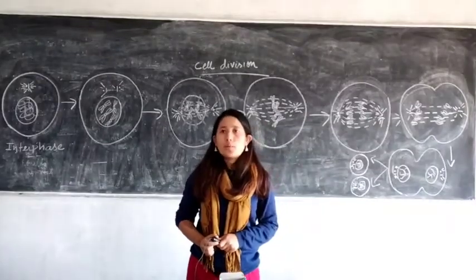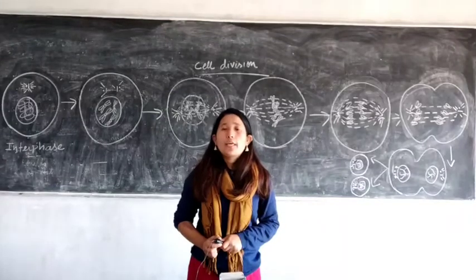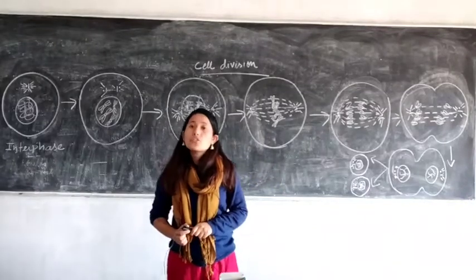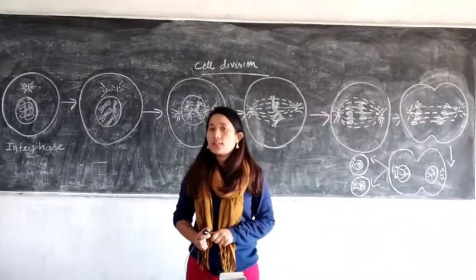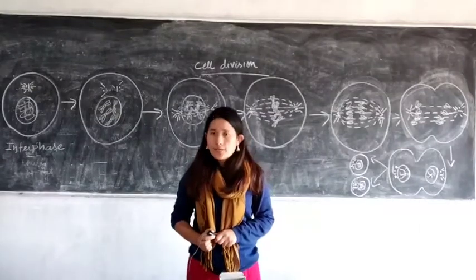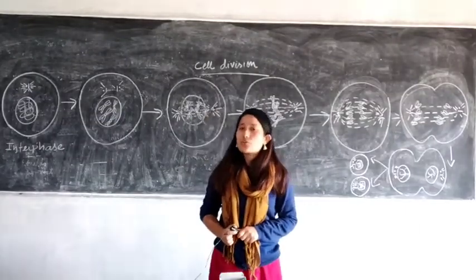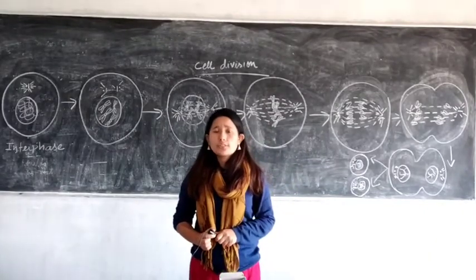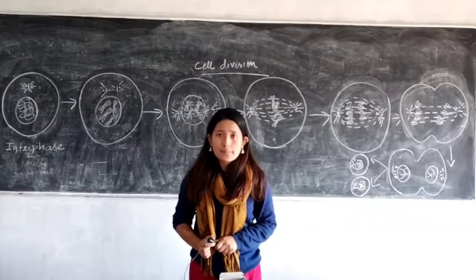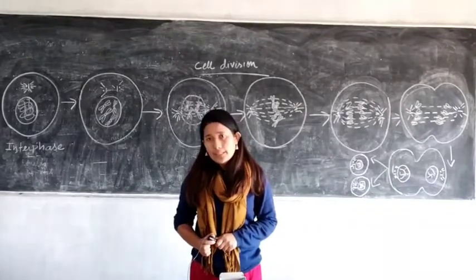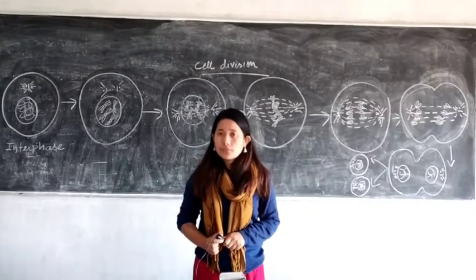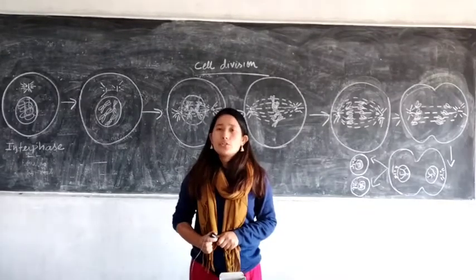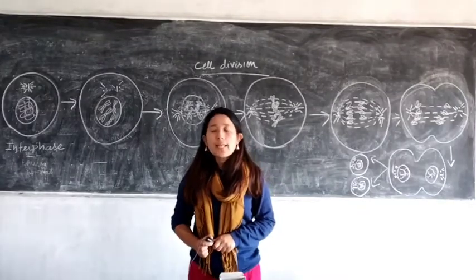For formation of sperm or eggs, meiosis occurs. The major difference between mitosis and meiosis, other than the site of origin, is that in mitosis the same number of chromosomes is passed on from the parental cell to the daughter cells — chromosome number is maintained. But in meiosis, only half the number of chromosomes from the parental cell is passed on to the daughter cells.